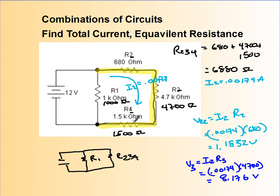Now let's find the voltage across the 1.5. I'm going to have to come over here and squish a little bit. Voltage across 4 is I2 R4, so this is 0.00174 times 1500, which equals 2.61 volts.